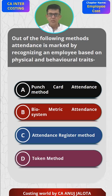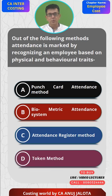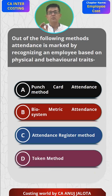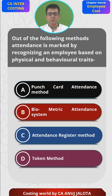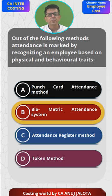Out of the following methods, attendance is marked by recognizing the employee based upon physical traits — how a person looks and so on. So the answer should be B — biometric system. Yes, that is the correct answer.